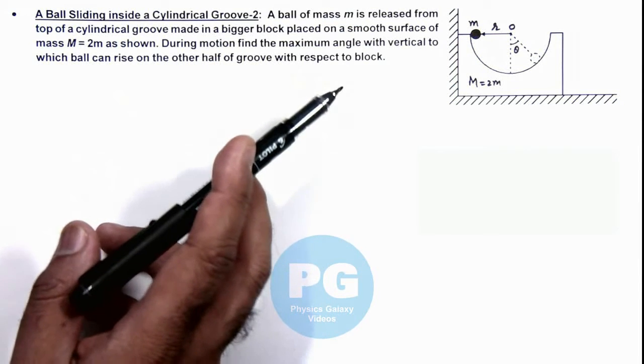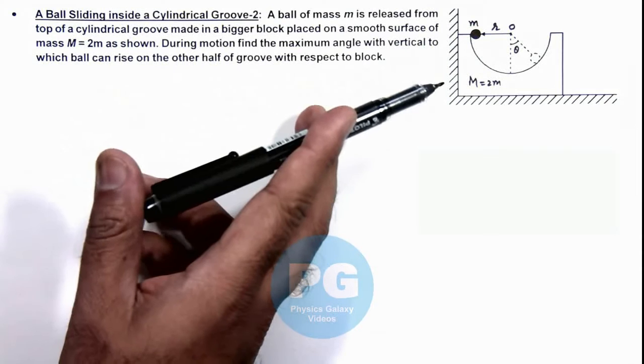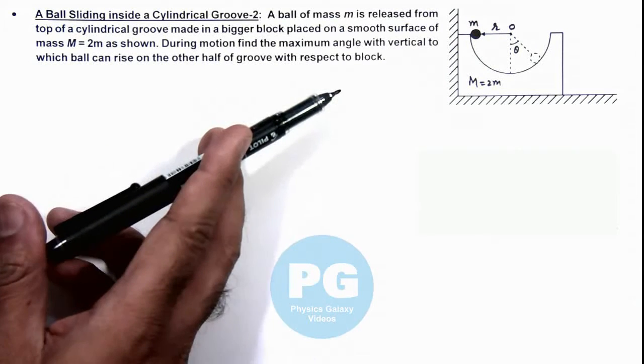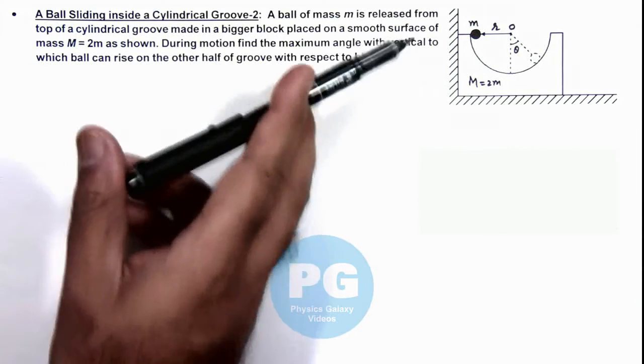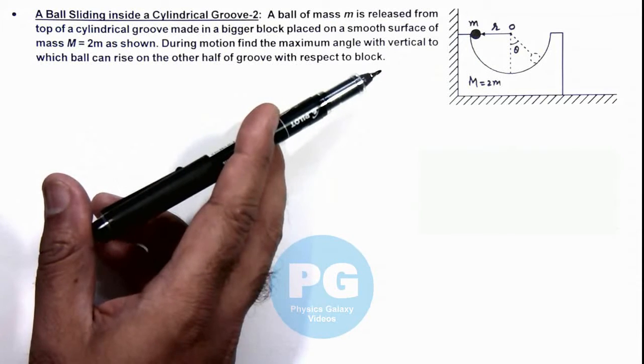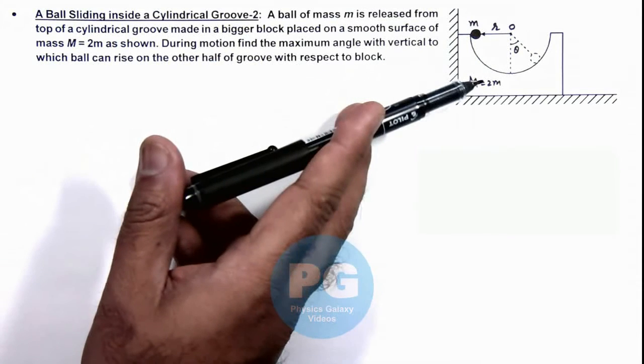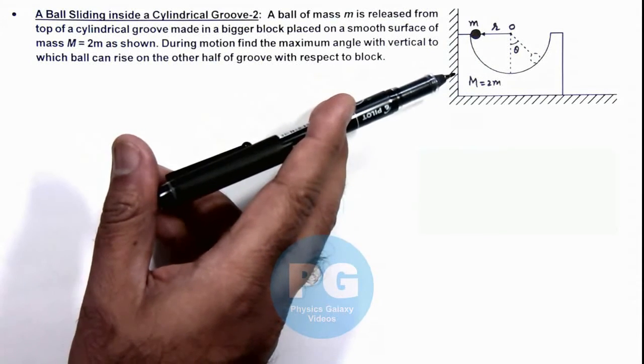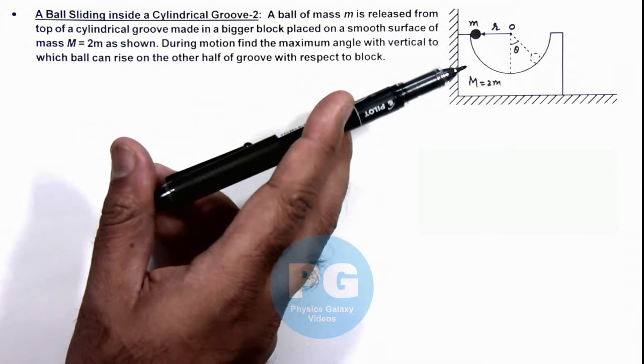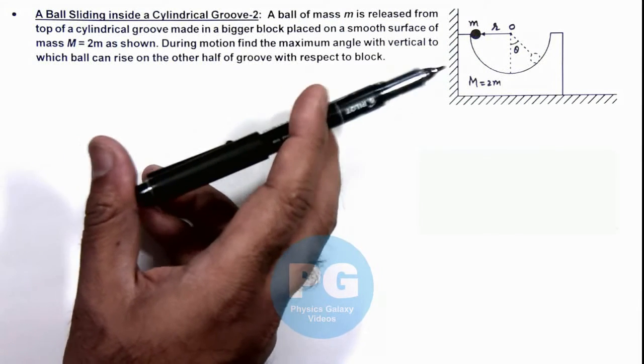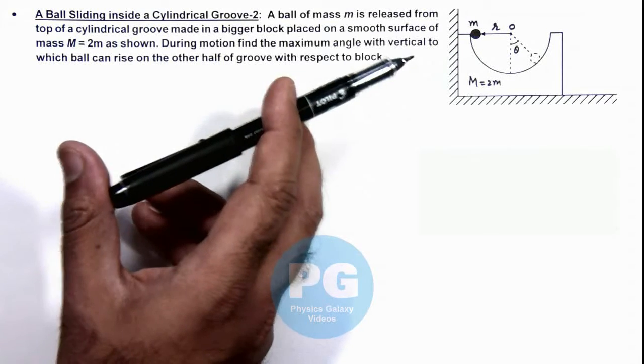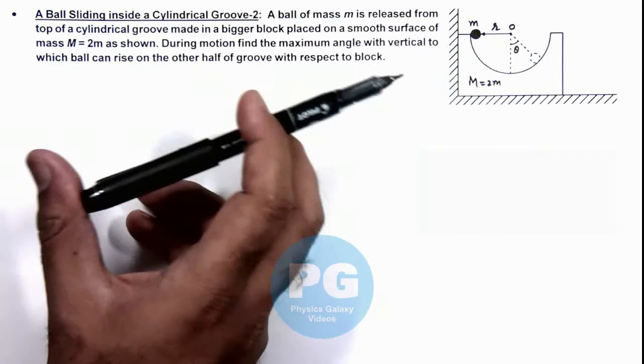We can see when the ball starts falling, due to normal reaction the bigger block will have a tendency to move toward left, but due to the wall it won't start. So till it reaches the bottommost point this bigger block will not move, but as soon as it starts on the right half of the groove, due to normal reaction the bigger block will start moving to the right.